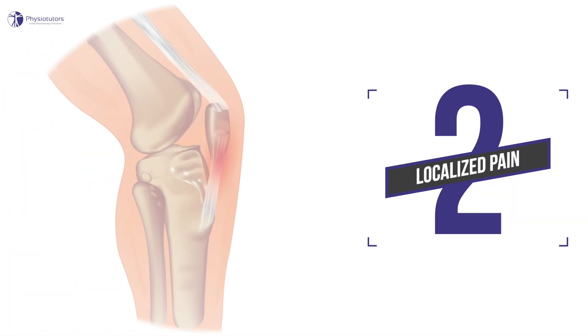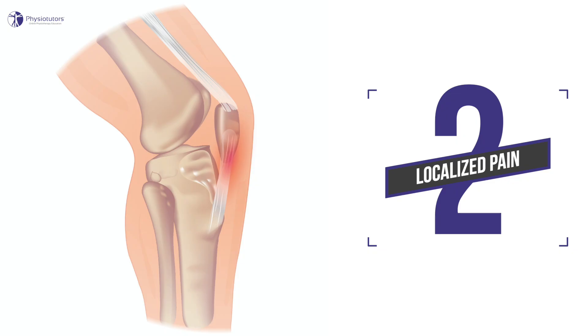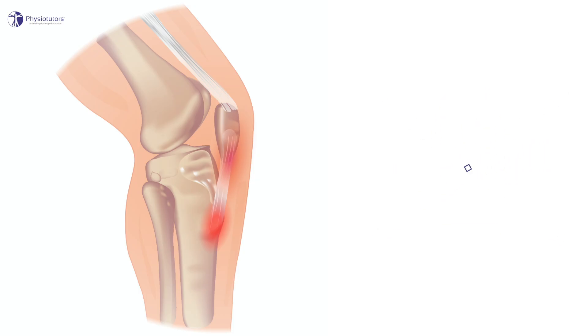Number 2: localized pain. While patellar tendinopathy can occur at the inferior pole of the patella, it can also occur at the insertion of the tendon at the tibial tuberosity, which is rarer. If a patient reports pain at the base of the patella, you might suspect quadriceps tendinopathy. A useful test to confirm patellar tendinopathy is the Royal London Hospital test, which has a good sensitivity of 88% and a specificity of 98% to differentiate patients with patellar tendinopathy from other sources of anterior knee pain.